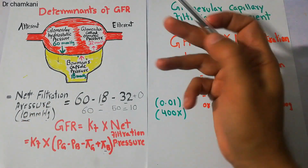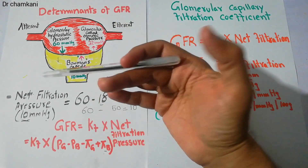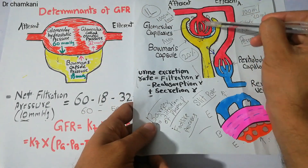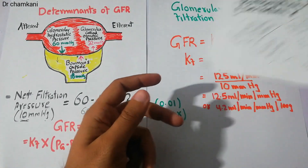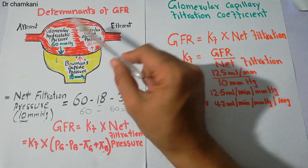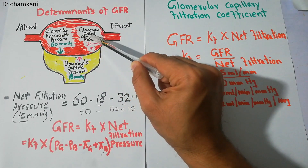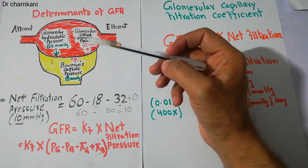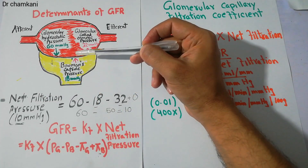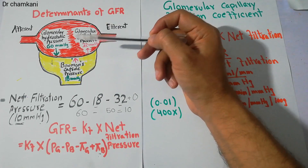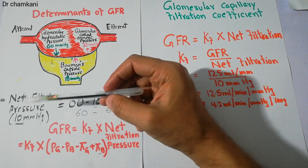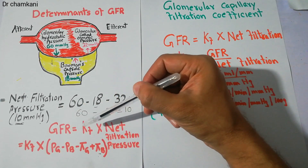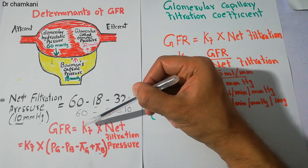In our last lecture, we discussed the determinants of GFR — the rate and speed of filtration at the glomerulus into the Bowman capsule. We simplified the diagram showing the glomerulus and Bowman capsule, and discussed the hydrostatic and colloid osmotic forces active there. Some forces favor filtration and some oppose it. Their calculation gives a net filtration pressure of 10 mmHg. The equation for GFR is: GFR = capillary filtration coefficient × net filtration pressure.